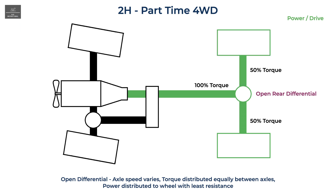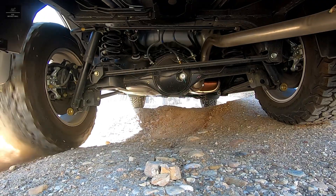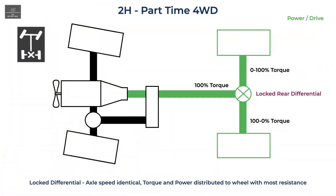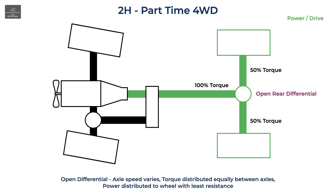Another example is when a wheel lifts in the air and the other wheel isn't spinning at all. Both wheels still receive 50 percent of the torque, but power is distributed at 100 percent to the spinning wheel in the air and 0 percent to the stationary wheel on the ground. With a locked differential, the axles are locked together so they rotate at the same speed or RPM. A locked differential therefore allows for an uneven or varied torque split between the axles, which is different from an open differential that always splits torque equally 50/50.